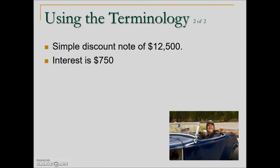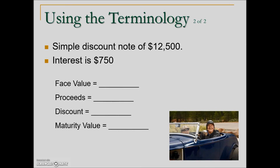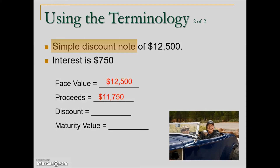Here's another similar example. Key note: this is a simple discount versus a simple interest note, meaning the face value is the amount asked for the loan. The proceeds — the amount the individual uses during the term — is the difference between the face value and the interest charged, which is $11,750. The discount amount is the specific term for the interest charge: $750. The maturity value is what the individual pays at the end of the term, the same as the face value — which equals proceeds plus the discount.